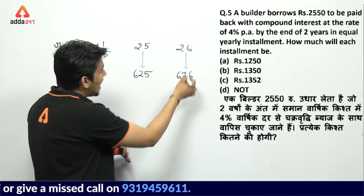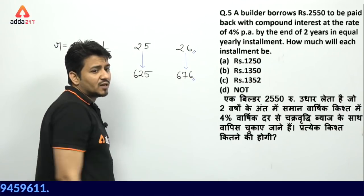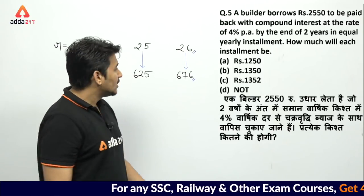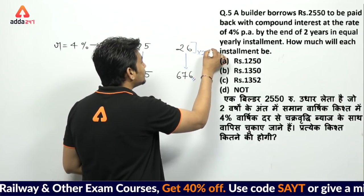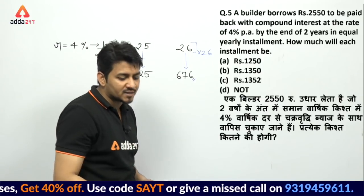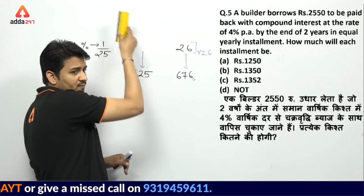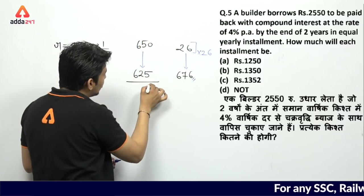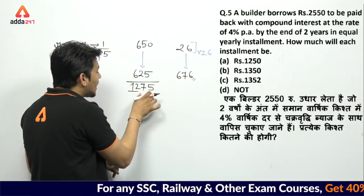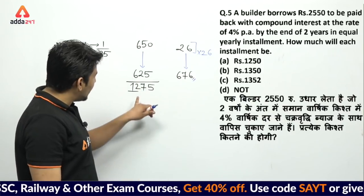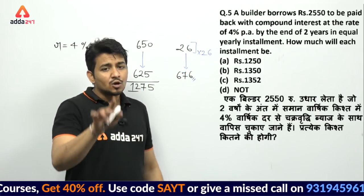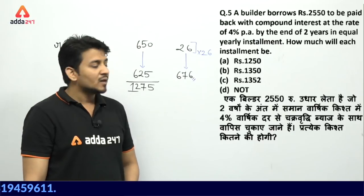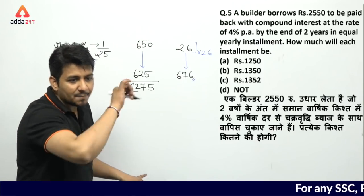To make installments equal, multiply the first ratio by 26: 25 × 26 = 650. So we write 650 instead. Total becomes 650 + 676 = 1275 + some carry → 1275 rupees total. If you need to pay 1275 rupees, you pay 2 installments of 676 each = 1352 rupees. But the actual amount to pay is 2550, not 1275.